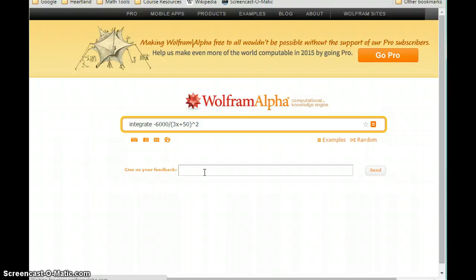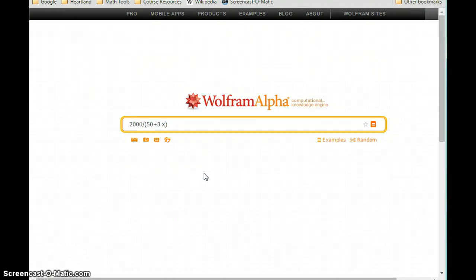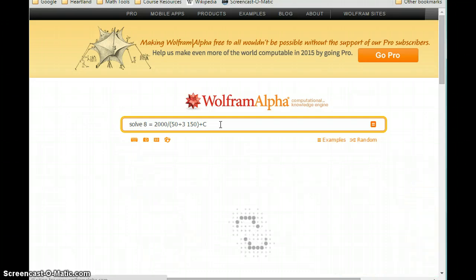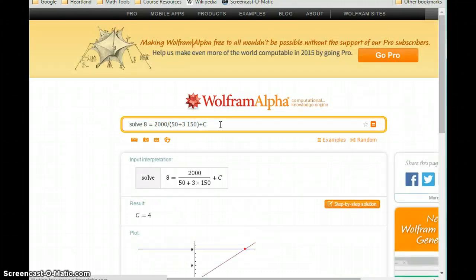So what we can do is take our indefinite integral, which has that plus c, that arbitrary constant at the end of it, and we can say solve 8 equals, so 8 being our price, and then for x, we'll plug in that value of 150. So we're plugging in the value for x that we know, the value for p, and we're going to solve for c. So we solve this, we get c equals 4.